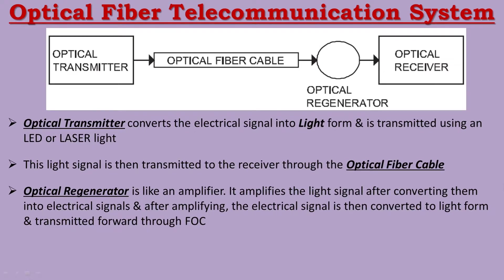When intensity changes, the signal becomes localized and weak. The optical regenerator boosts the electrical signal — it takes the weak light signal and converts it to a strong, high-intensity light signal. It converts the light to an electrical signal, amplifies it, then converts it back to a light signal.